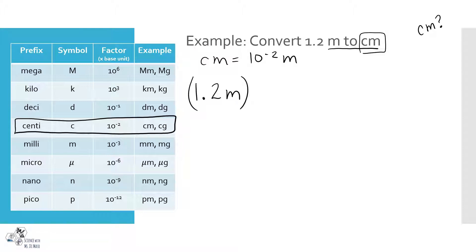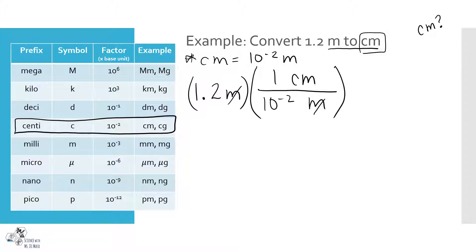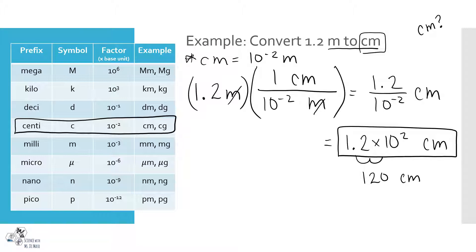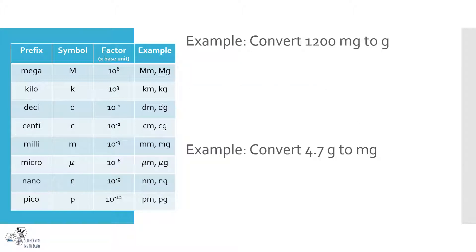I have 1.2 meters and need to convert to centimeters. I take my conversion factor in fraction form with meters in the denominator to cancel them out. I end up with 1.2 times 10 to the second centimeters, which is 120 centimeters. That makes sense — if I have 1.2 meters, 120 centimeters definitely fits that amount. It makes common sense, not just definition sense.